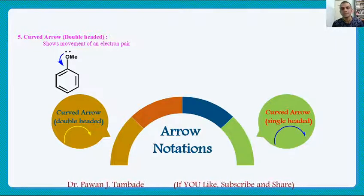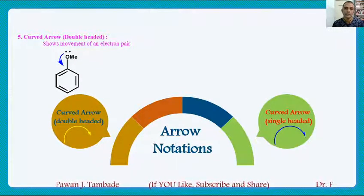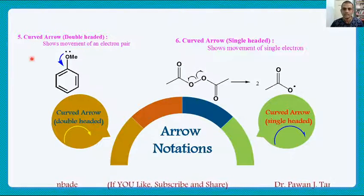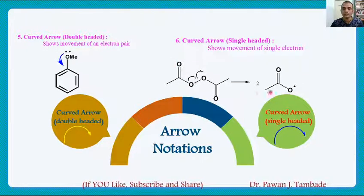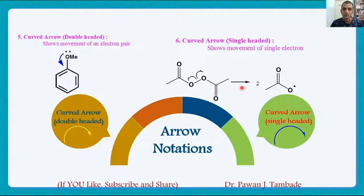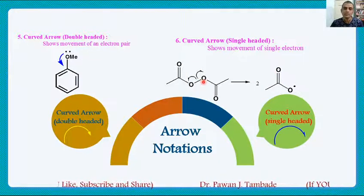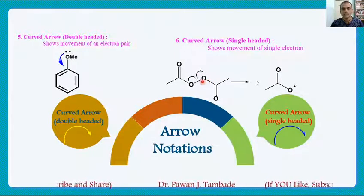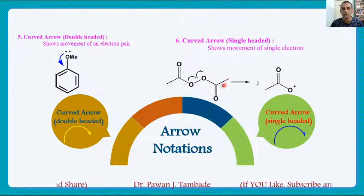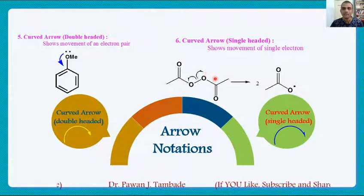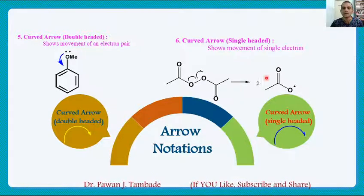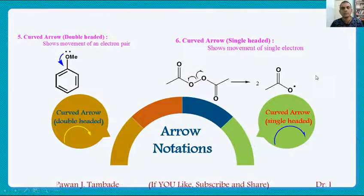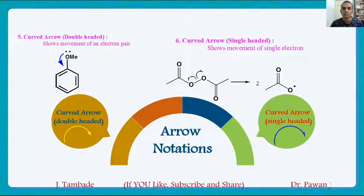The next arrow is the single-headed curved arrow. This single-headed curved arrow is used in free radical mechanisms. For example, in a particular reaction, a material on heating is converted into a free radical. During this, a single bond between oxygen and oxygen breaks homolytically so that each oxygen takes back one electron. This movement of a single electron is shown by the single-headed curved arrow, which we normally encounter in free radical reactions or homolytic fissions.